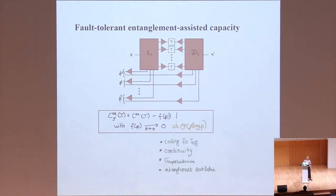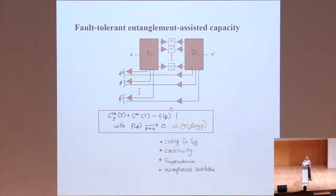What we are doing in the end is constructing a coding scheme where we are coding for the effective channel rather than the original channel. This costs us a little bit, and we use continuity for the relation between the original channel T and this effective channel. We also pay a price for the entanglement distillation. This function F of P is of the order P log P, so when the single gate error P goes to zero, F of P also goes to zero. We recover that you can communicate in the noiseless case at the noiseless entanglement-assisted capacity, and this works for any channel T.